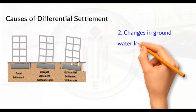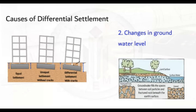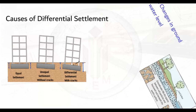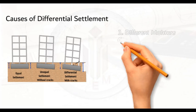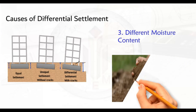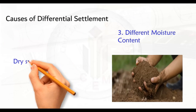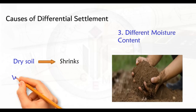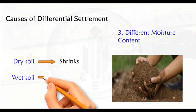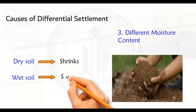The next factor is changes in groundwater level. If the groundwater level under the foundation changes, the soil will compress or swell, which can cause differential settlement, especially when the foundation is not designed to accommodate these changes. The next factor is different moisture content. Soil that is too dry or too wet will settle more than soil at a moderate moisture level, because dry soil shrinks when it absorbs moisture, whereas wet soil swells when it dries out.